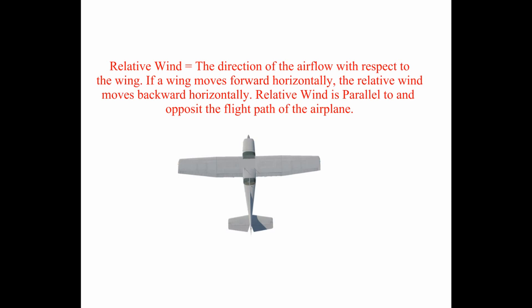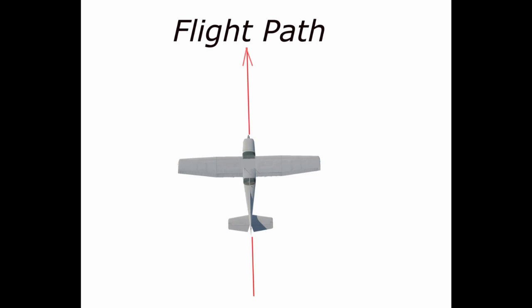To understand yaw there are a few other definitions that you need to know about. Relative wind is defined by the Pilot Handbook of Aeronautical Knowledge and the Airplane Flying Handbook as the direction of airflow with respect to the wing. If a wing moves forward horizontally, the relative wind moves backwards horizontally. Relative wind is parallel to and opposite of the flight path of the airplane.